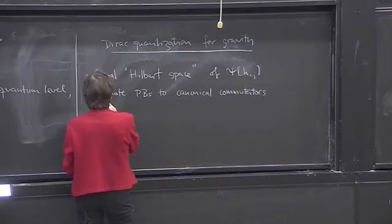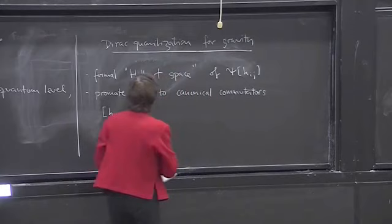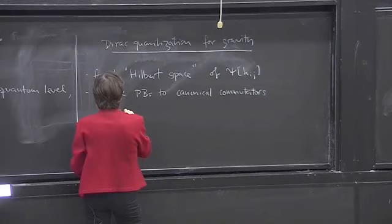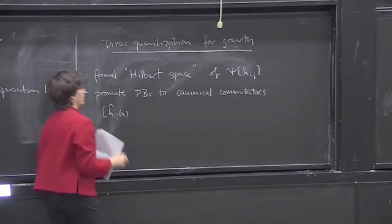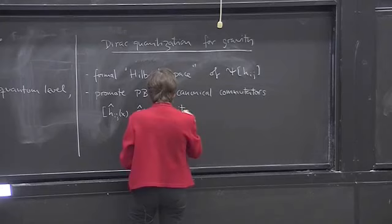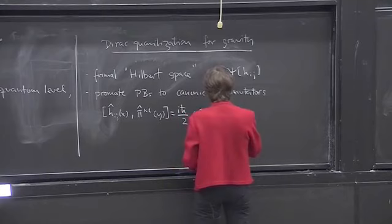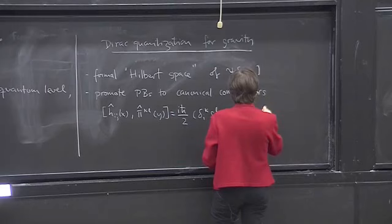So I had written down the Poisson relations for the HIJs and their canonical conjugates. And now I just imagine I have a bunch of self-adjoint operators, and I hope these exist in some way. And if they do, I'd like them to satisfy these relations with delta IK, delta JL, plus delta IL, delta JK, delta 3 of x and y.